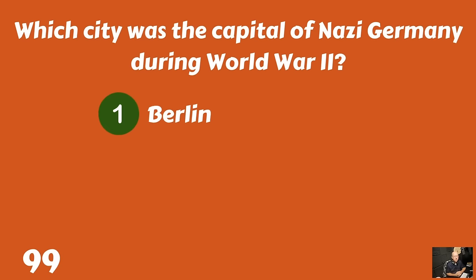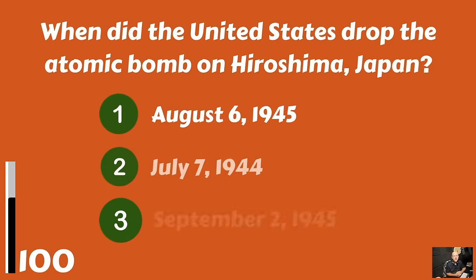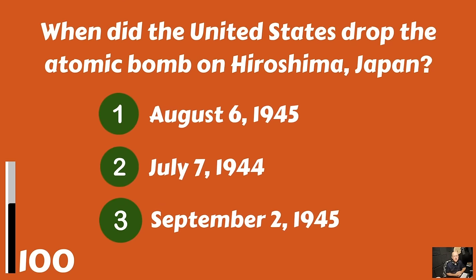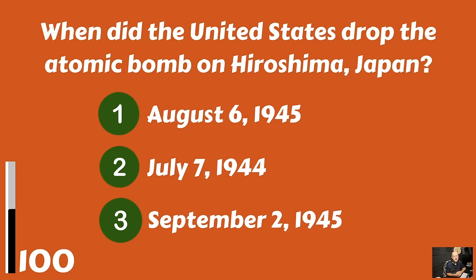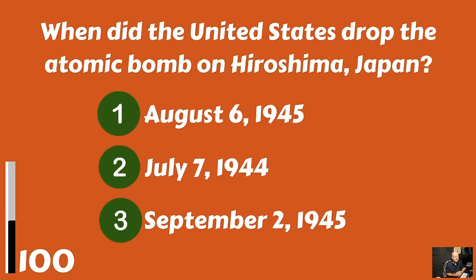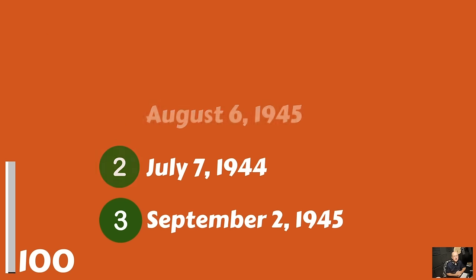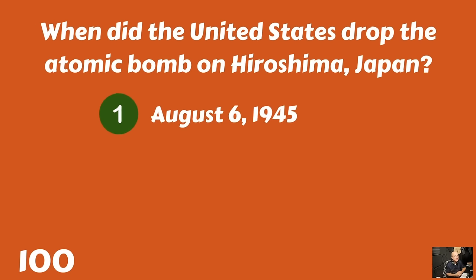And question 100: when did the United States drop the atomic bomb on Hiroshima, Japan? August 6, 1945? July 7, 1944? Or September 2, 1945? They dropped it on August 6, 1945.